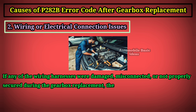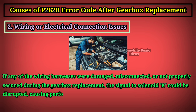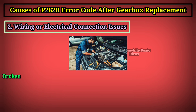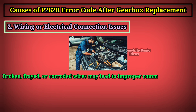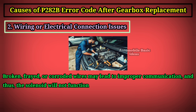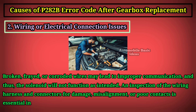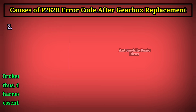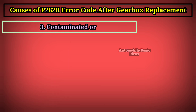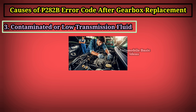Broken, frayed, or corroded wires may lead to improper communication, and thus the solenoid will not function as intended. An inspection of the wiring harness and connectors for damage, misalignment, or poor contacts is essential in resolving the issue.